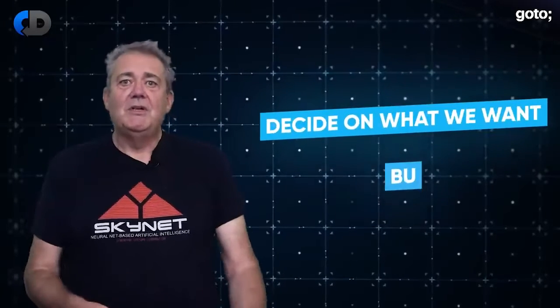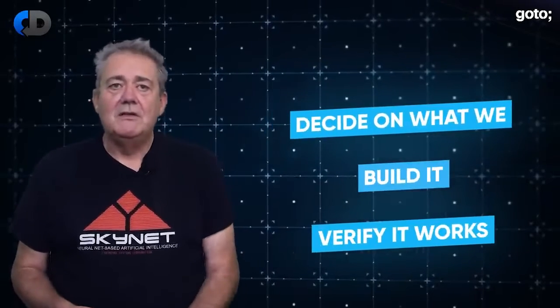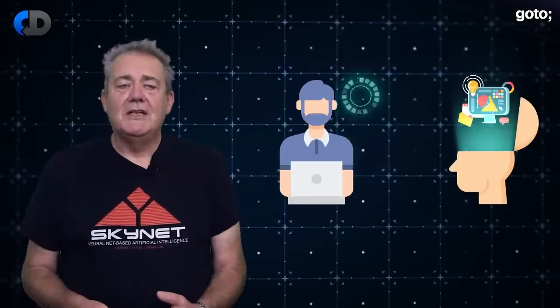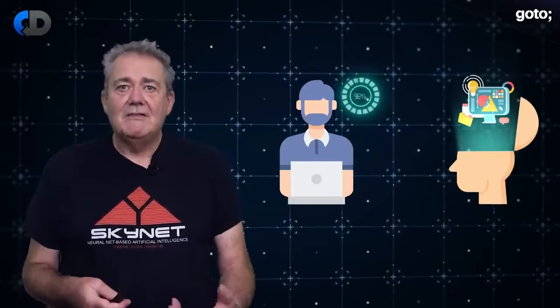Software development is structured around three activities: deciding on what we want, building it, and verifying that what we build does what we want. To do a good job of all of these things it's important to get a good start by communicating effectively what it is that we want our software to do. This shapes everything else that we do really. If we get this wrong it can make it difficult or even impossible to do a good job.